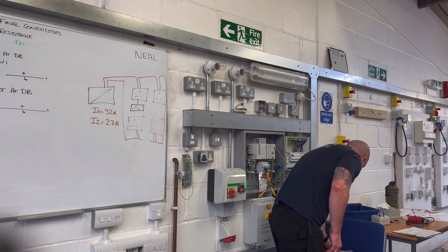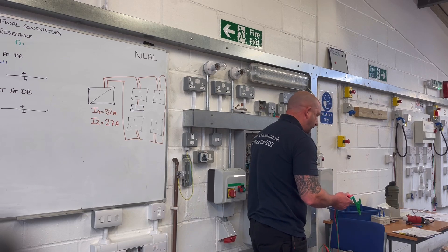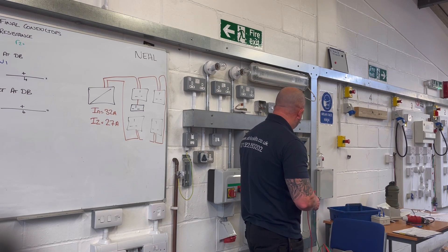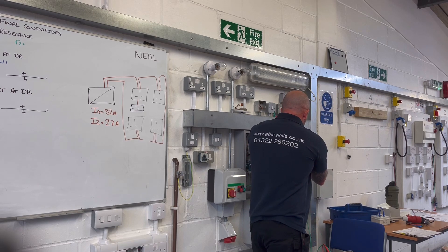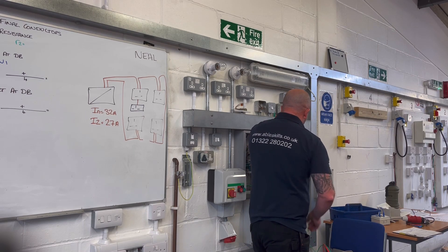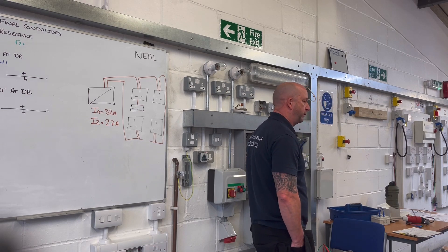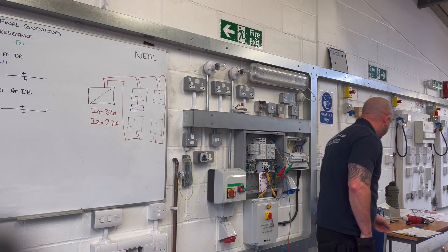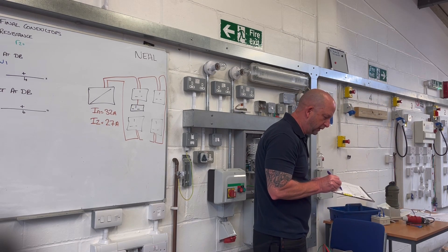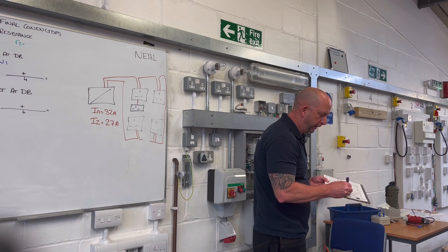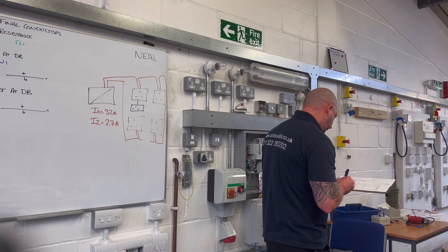The continuity tester stays set up from the previous testing — it's still zeroed, I don't need to do anything to it. So let's measure the value of little R1. It's coming in at 0.45 of an ohm. So what I do now is record that on my schedule of test results. We're in continuity, on ring final, and little R1 is coming in at 0.45 ohm.